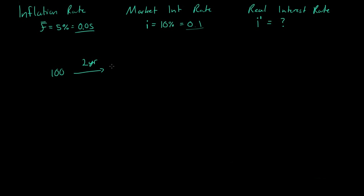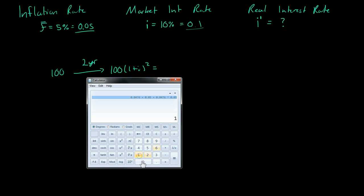So how do we find that? Well, we take the $100 and we multiply it by 1 plus i to the power of 2. So what is that equal to? Well, that is equal to 1 times 1.05,